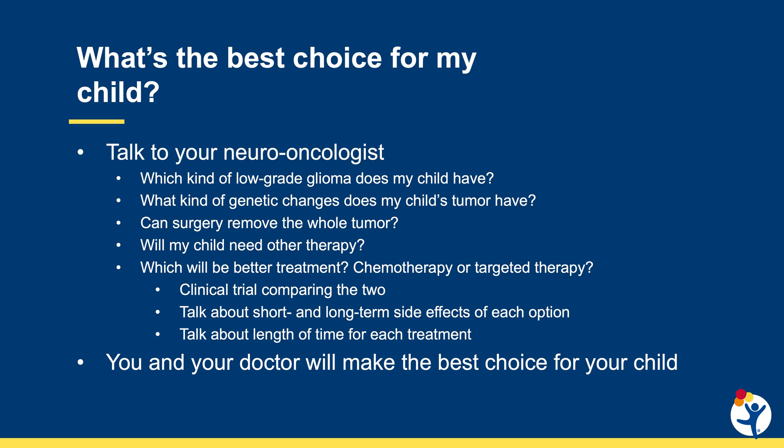Finally, talk about the length of time for each treatment. We know that chemotherapy lasts approximately a year, and targeted therapy currently lasts sometimes two years or even more. Overall, your doctor and you will make the best choice for your child based on the information you have about your child, the tumor, and your family.